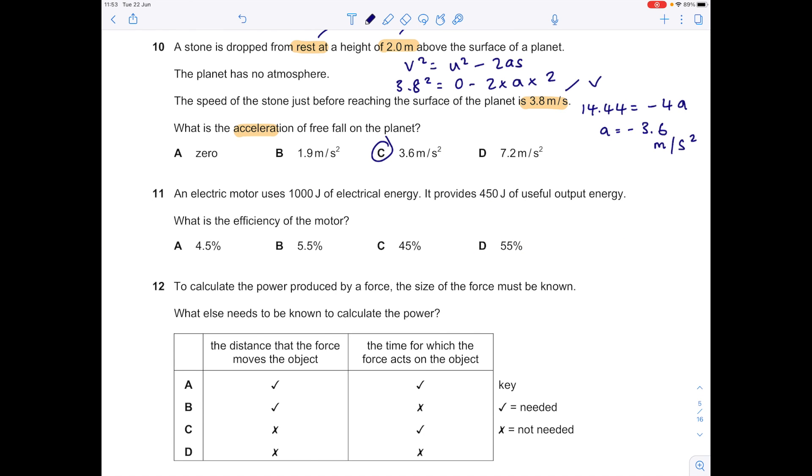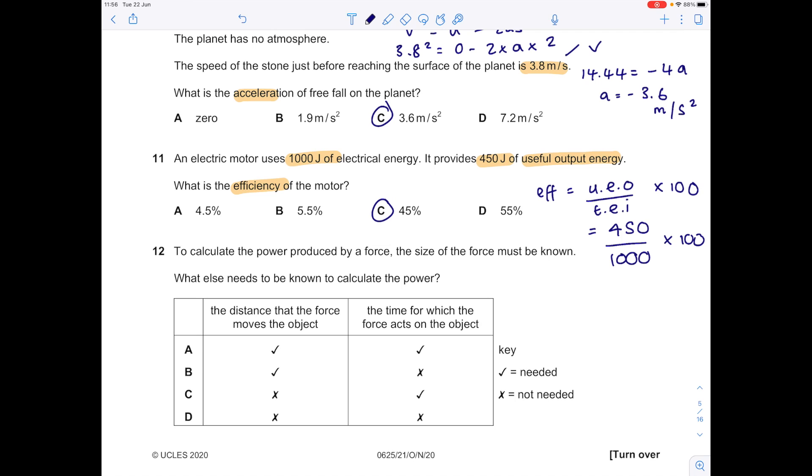An electric motor uses 1000 joules of electrical energy. It provides 450 useful output energy. What is the efficiency of the motor? So efficiency equals useful energy out over total energy in times by 100, which is therefore 450 divided by 1000 times by 100. So the answer here is 45%.